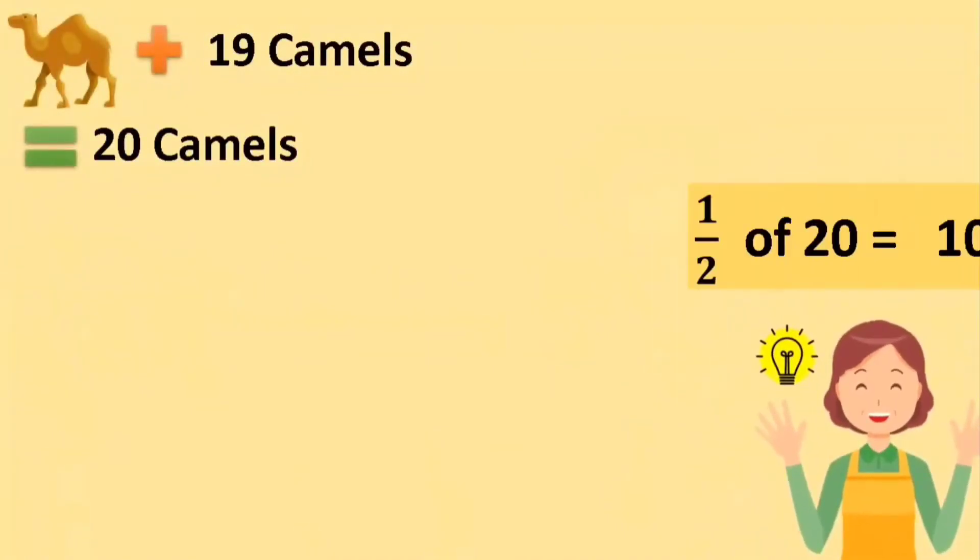You want half of the camels. Don't you? She said to the eldest daughter. Half of 20 is equal to 10. Take 10 camels.